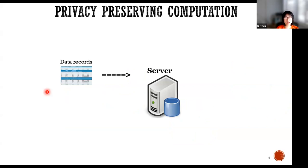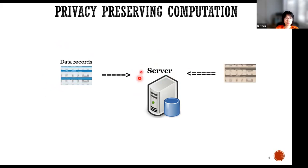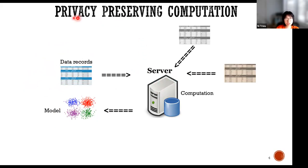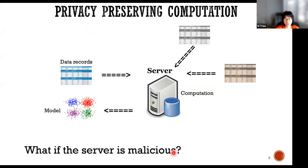At the moment, if you don't want to share the data directly to the cities, you can trust someone in the middle. For example, we trust a server, and all the cities send their data records to the server. This server does some computation — either machine learning or matching computation — and returns the output to the city who wants the final output. Clearly, this is a third-party solution. Can we say this is privacy-preserving? What happens if the server is malicious? It's not really privacy-preserving computation.